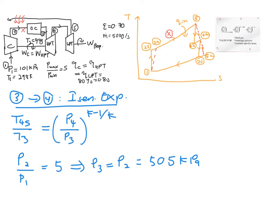It seems like we are going round in circles, so let's look at the T-s diagram. We cannot find T4S from that equation because we lack P4. Looking at the other possibilities: states 3 to 4S represent the high pressure turbine, and from the physical diagram, the work of the high pressure turbine equals the work of the compressor. Making use of this relation may give us T4S or T4A, so let's try that.